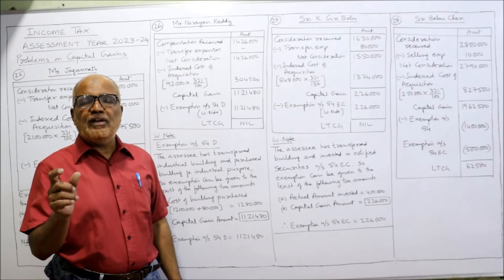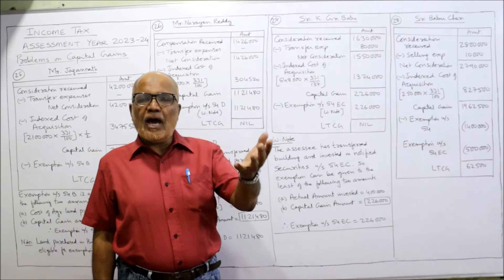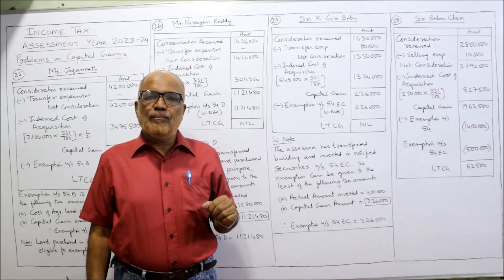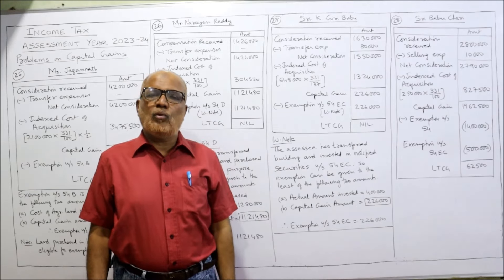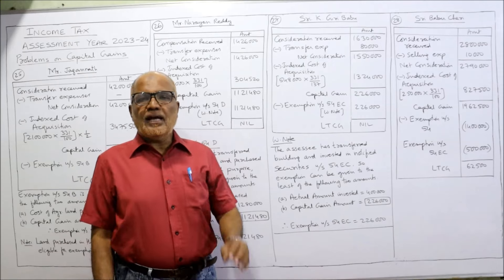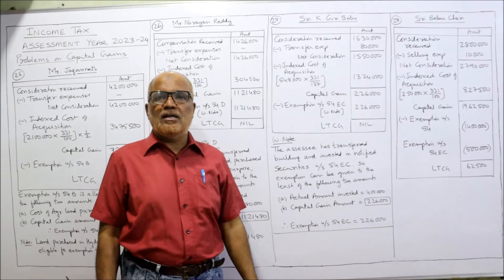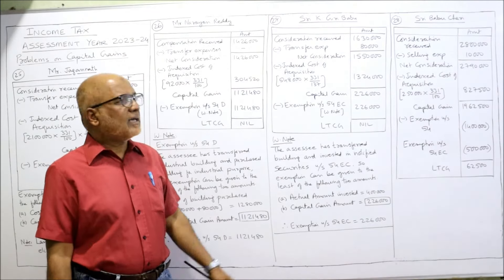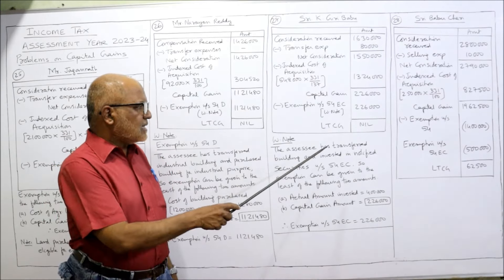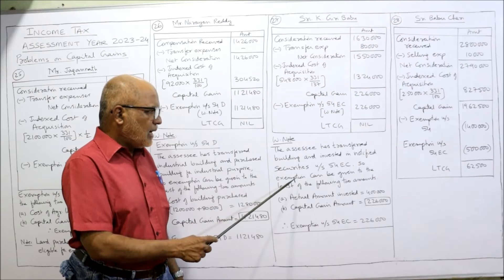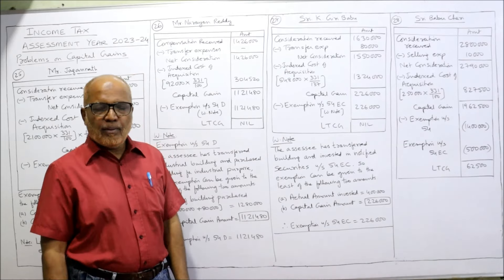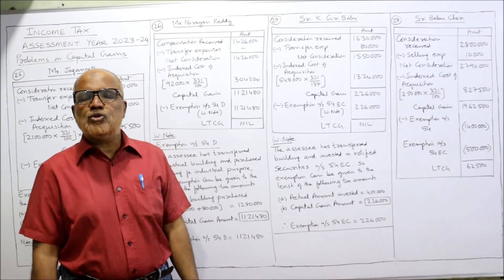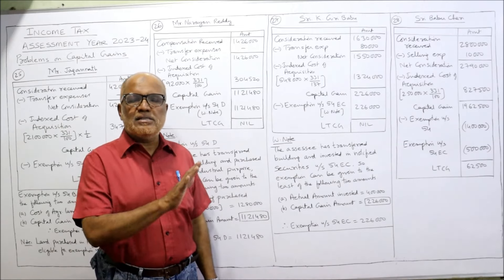From this capital gain, exemption under section 54EC applies. The Income Tax Act says if a building is sold and from the proceeds notified securities are purchased, exemption is allowed. The assessee has invested in NABARD, which is a notified security under section 54EC. He has invested 4,00,000 rupees but the capital gain amount is only 2,26,000. Exemption is the least of the two: 2,26,000. So that will be allowed as exemption under section 54EC and the LTCG will be nil.